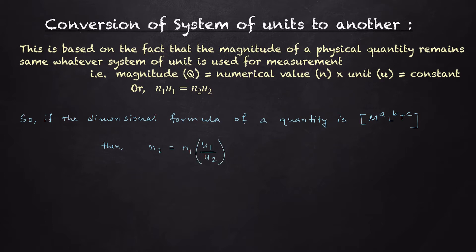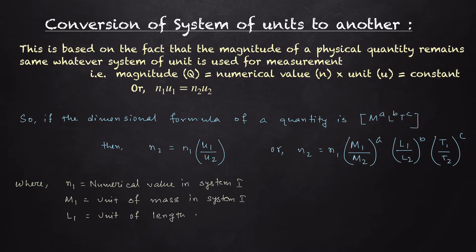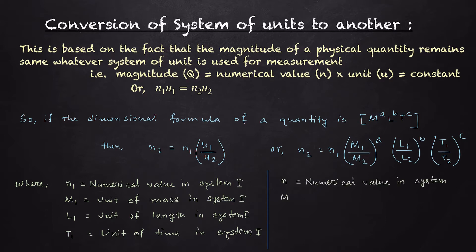Here N₁ is the numerical value in the U₁ system of unit and N₂ is the numerical value in the U₂ system of unit. Therefore we can write N₂ = N₁ × (M₁/M₂)^A × (L₁/L₂)^B × (T₁/T₂)^C, where M₁, L₁, T₁ are the mass, length, and time units in system one, and M₂, L₂, T₂ are the corresponding values for system two.